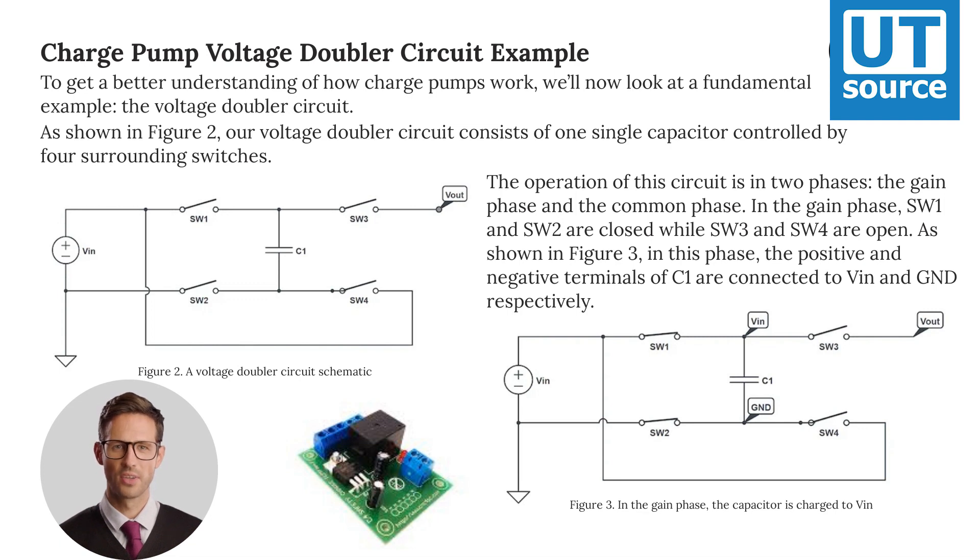In the gain phase, SW1 and SW2 are closed while SW3 and SW4 are open. As shown in Figure 3, in this phase, the positive and negative terminals of C1 are connected to VIN and GND respectively.